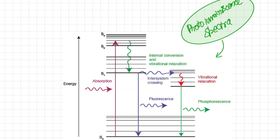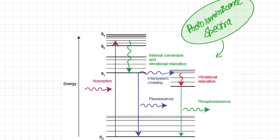Photoluminescence spectroscopy includes both fluorescence and phosphorescence. In this technique, the molecule is excited by absorbing energy and then radiates that energy as light. If the transition to the ground state occurs immediately, it is called fluorescence; if the release of energy in the form of light takes place after some delay, it is called phosphorescence. In nanomaterial spectroscopy, photoluminescence spectra are used to obtain information about the chirality of carbon nanotubes.